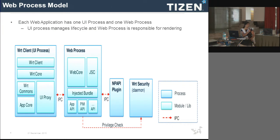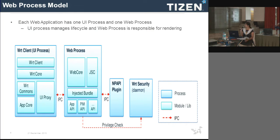Every application will have two processes: one is the UI process and another is the web process. The UI process takes care of the lifecycle of an application. The web process renders your HTML content on the web view. It is developed on top of WebKit2, which is an EFL library-based WebKit.